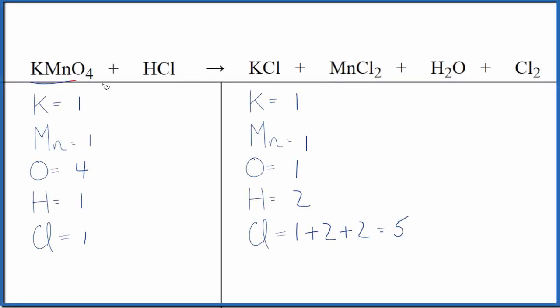Let's balance the equation for KMnO4 plus HCl. This is potassium permanganate plus hydrochloric acid. This is a difficult equation to balance.